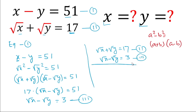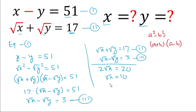To eliminate y, we add equation 2 and equation 3. After adding, we get 2 under root x — the under root y terms cancel — and 17 plus 3 equals 20. Dividing both sides by 2, under root x equals 10. Squaring both sides, the value of x is 100.